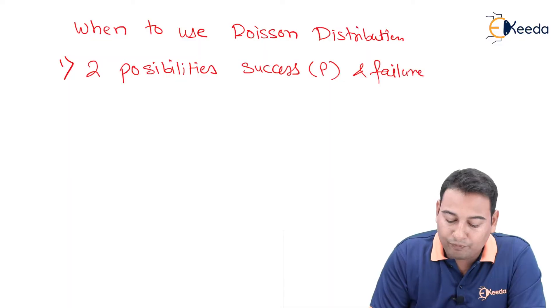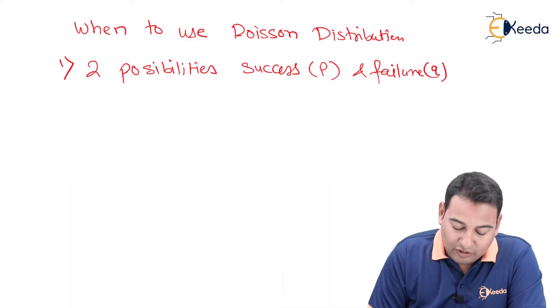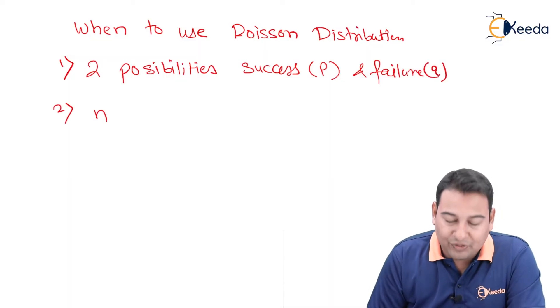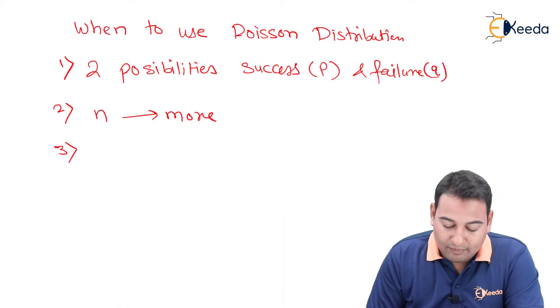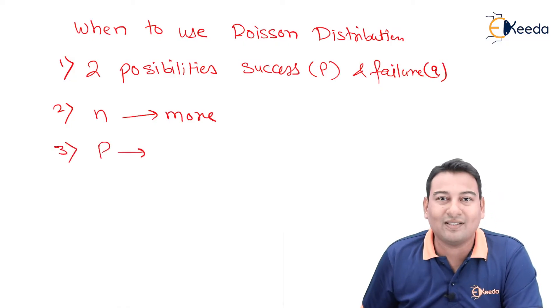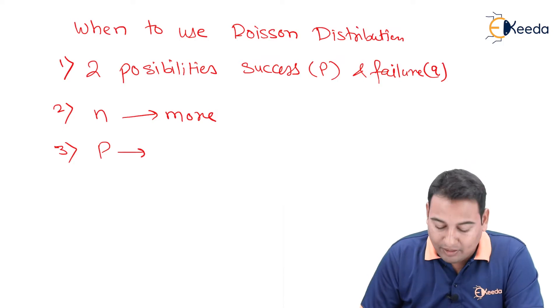Point number two: if you remember, in case of binomial distribution, n (that is number of trials) is less. Here it is more. And there, probability of success was more; here probability of success is less.